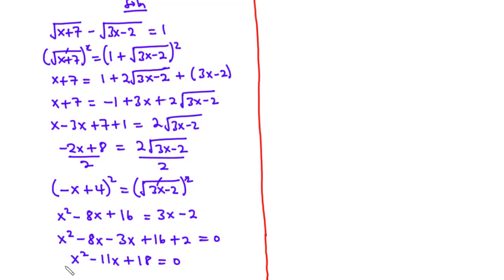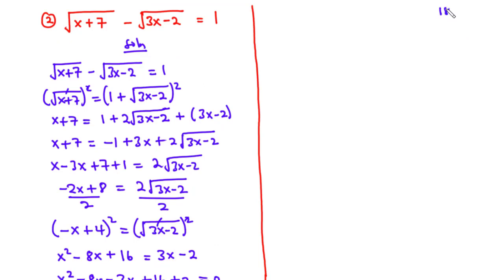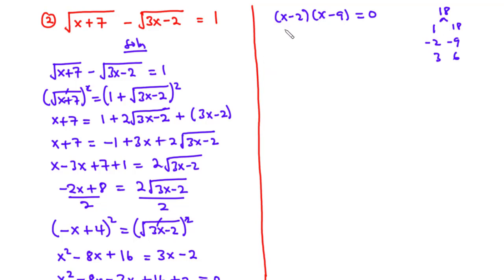We have a quadratic equation. The coefficient of x squared is 1, and the constant term is 18, so we multiply 1 by 18 to get 18. We need factors of 18 that multiply to 18 and add to negative 11. The factors are negative 2 and negative 9: negative 2 times negative 9 is 18, and negative 2 plus negative 9 is negative 11. So the factored form is x minus 2 times x minus 9 equals 0, giving x equals 2 and x equals 9.